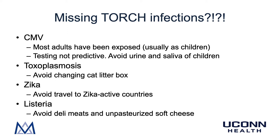Toxoplasmosis infection in pregnancy is avoided by having women not change the cat litter box. Zika virus isn't on the original TORCH infection list; however, it can cross to the baby and cause congenital infection — we advise women to avoid travel to Zika-active countries. Finally, listeria is a bacteria that lives in animal intestines and can get into meat during slaughter. To avoid congenital listeria infection, we recommend women avoid deli meats or cook them to 165°F, and avoid any unpasteurized soft cheese.